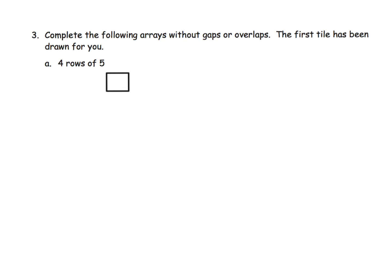This happens to be question 3. In problems 1 and 2, students had cut out a square and were tracing it. Now in this problem, they're given one representative square and are supposed to draw the remainder of that array. This says four rows of five.